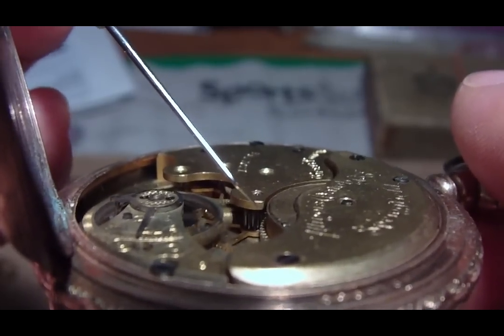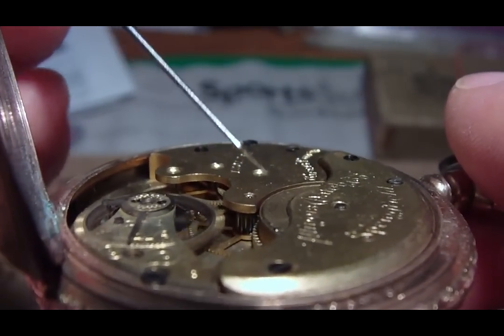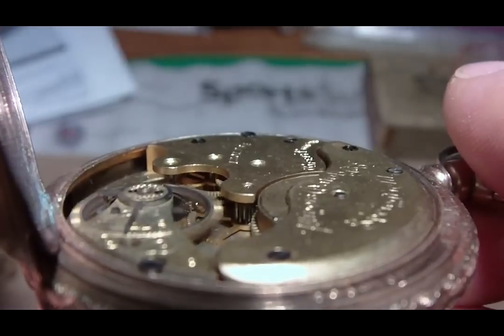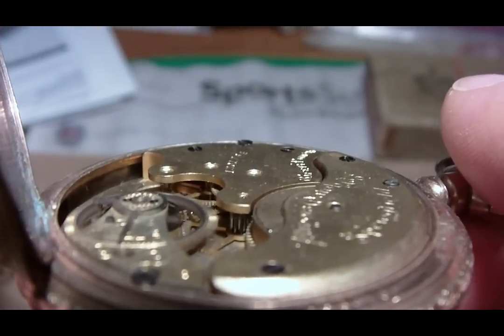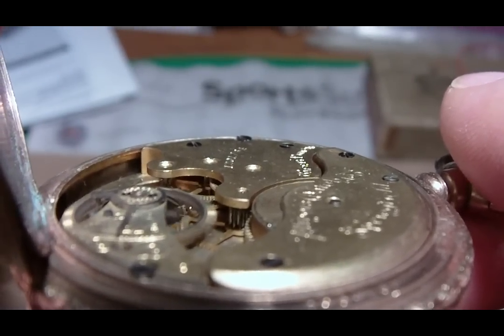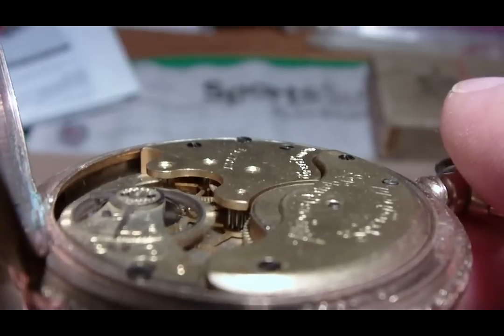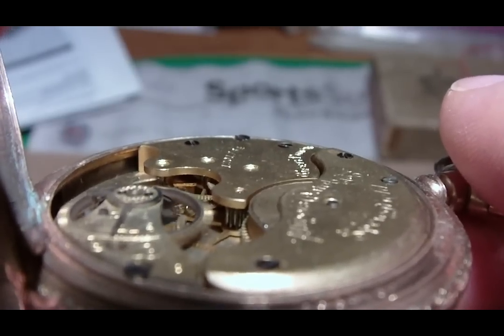There's that small gear in there that the mainspring barrel rides against. When the mainspring breaks, it spins in the opposite direction.